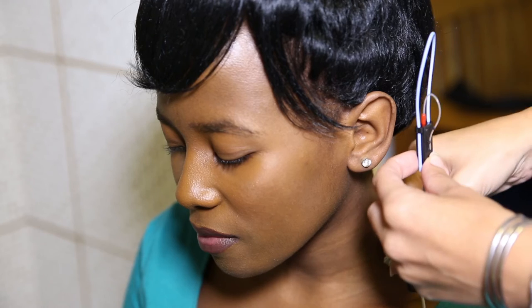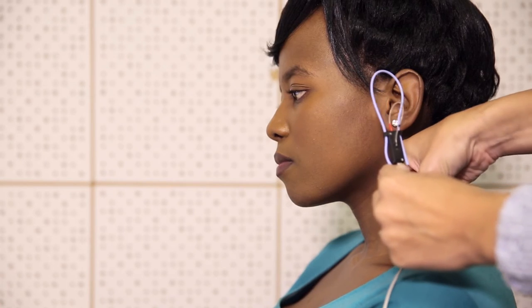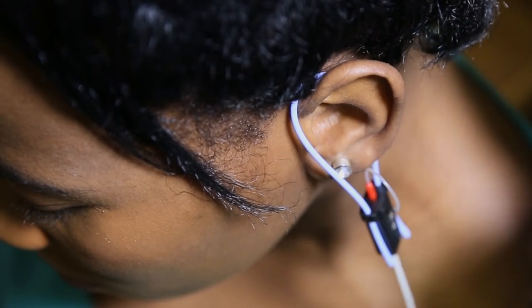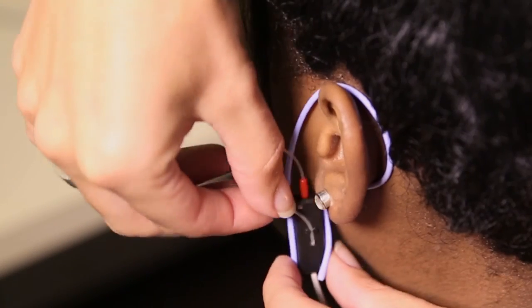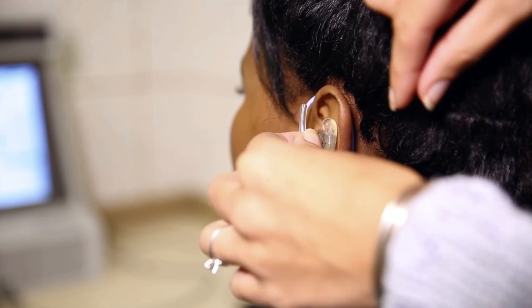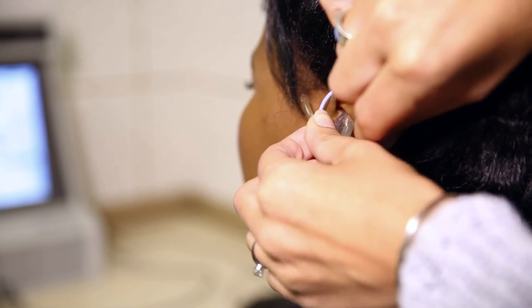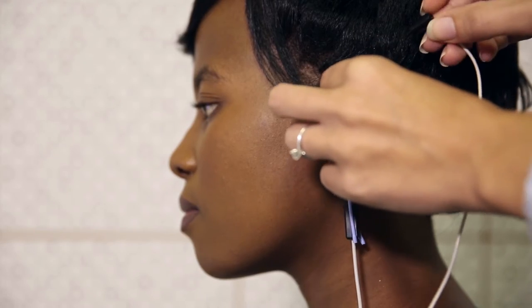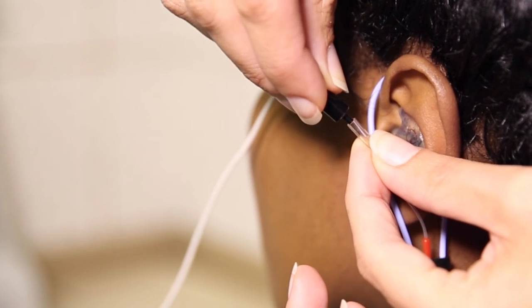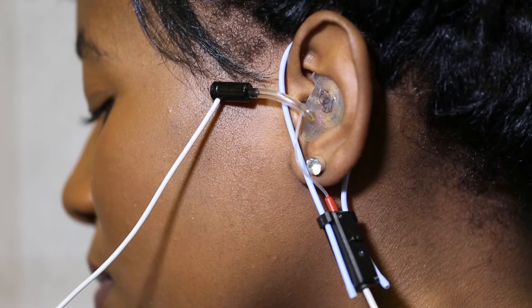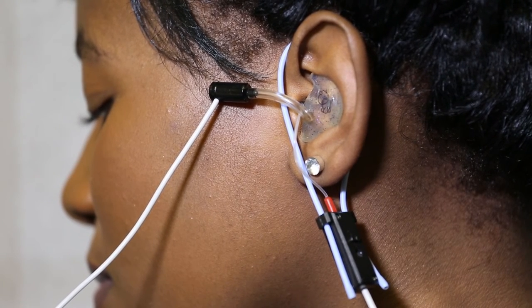We then attach the probe microphone to your client. And then place the blue loop over the test ear like so. And place the probe, which is attached to the real ear microphone, into the ear. We then place the mould in, being careful not to squash the probe.